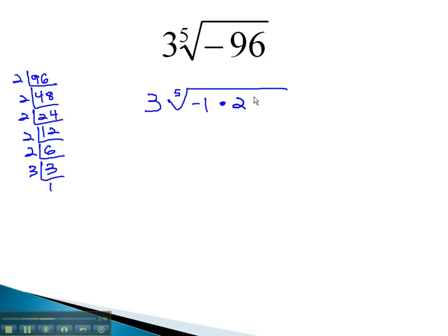We now have 2 to the 5th power times 3. On the negative 1 factor, we will always attach the matching exponent, as long as that matching exponent to the index is odd. The reason for this is negative 1 to any odd power will always be negative 1. In other words, we can always pull a factor of negative 1 out whenever the number is negative and the index is odd.